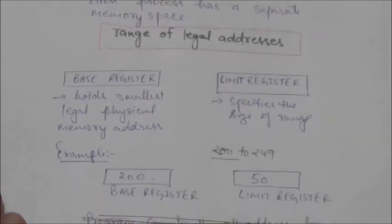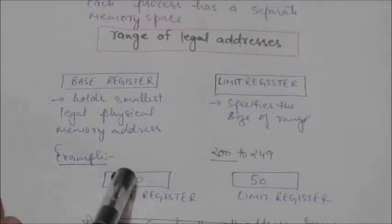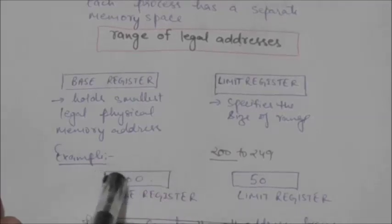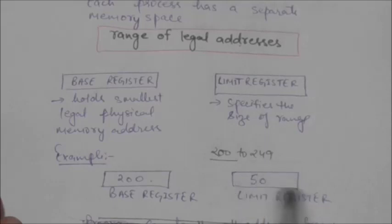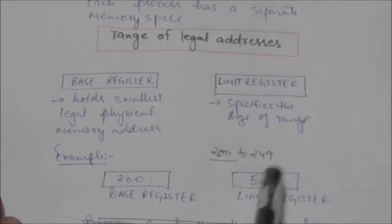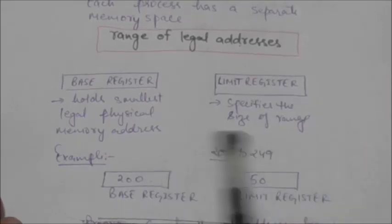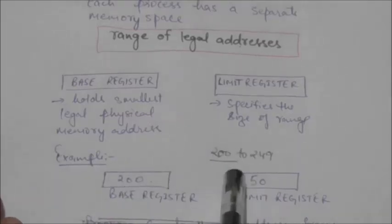Consider an example. Suppose the content of the base register is 200, so the smallest legal physical memory address is 200. Suppose the content of the limit register is 50, meaning the size of the range is 50. In this case, the program can legally access all addresses from 200 to 249.